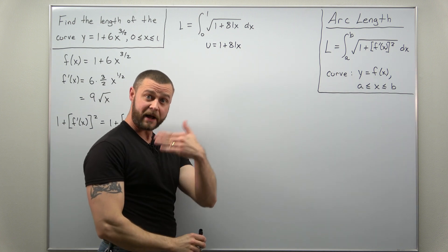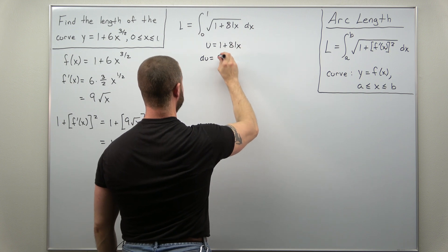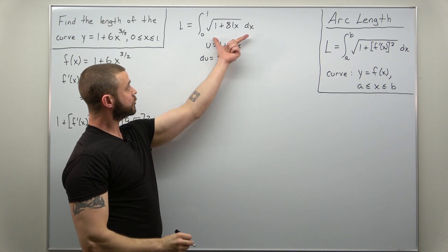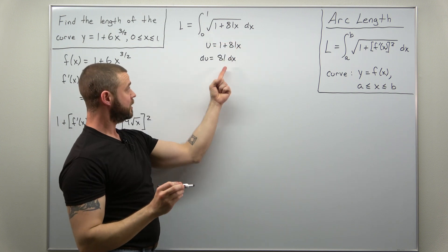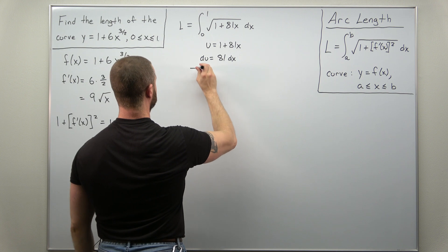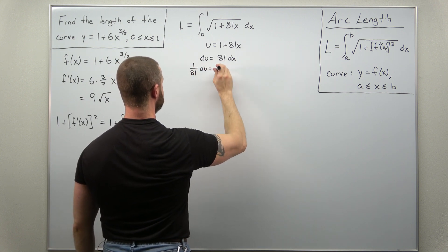Calculate your differential du as normal. That looks like we'll get 81 dx. Notice in your integral, you're missing an extra factor of 81 for the differential. So I'll divide it over. And I'll write that as 1 over 81 du equals dx.